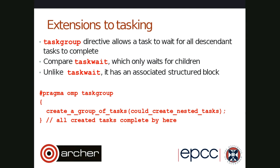Everything inside the task group structured block — all tasks generated inside that block — are guaranteed to be complete before the block exits, before you go past the closing curly brace. Any task that was generated inside that block of code has finished by that point. So it's a deep wait as opposed to a shallow wait in the task tree. The intention was that this should always have been there, but it didn't quite make it into version 3.